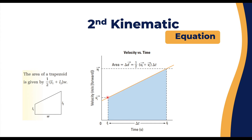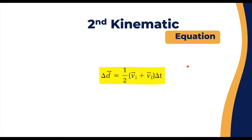In the trapezoid formula, i1 is v-initial and i2 is v-final, and w is Δt. That gives us the second equation of motion. The final form to remember is: Δd (or Δs or Δx) equals one-half multiplied by (v-initial plus v-final) multiplied by Δt. This lets you find displacement as long as you have v-initial, v-final, and Δt.